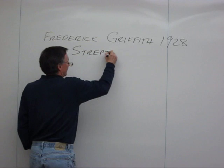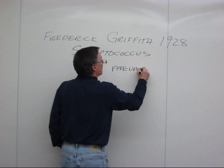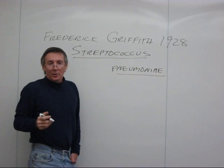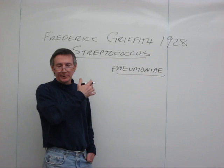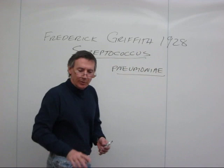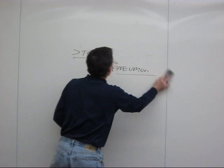He was working with the pathogen Streptococcus pneumoniae, which is a common cause of bacterial pneumonia. There was considerable interest in developing a vaccine against Streptococcus pneumoniae, and in order to do that, they needed to know more about the biology of the organism.